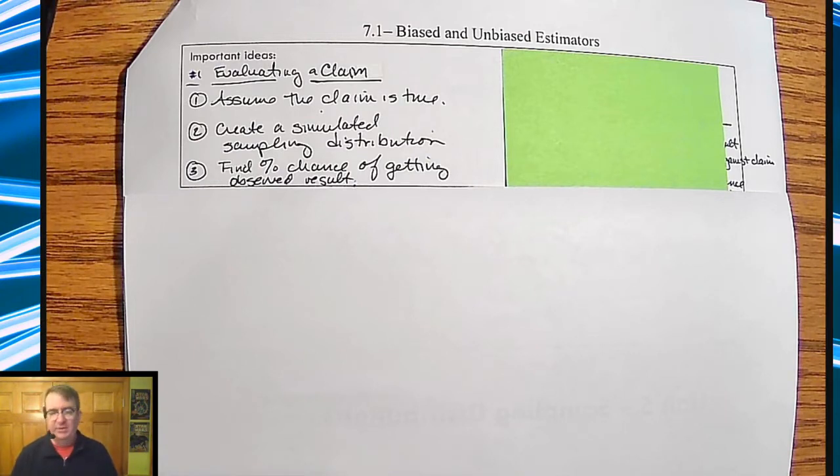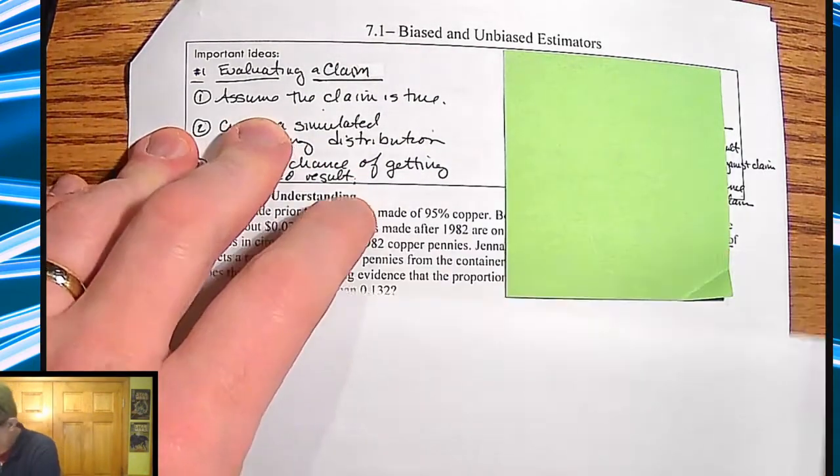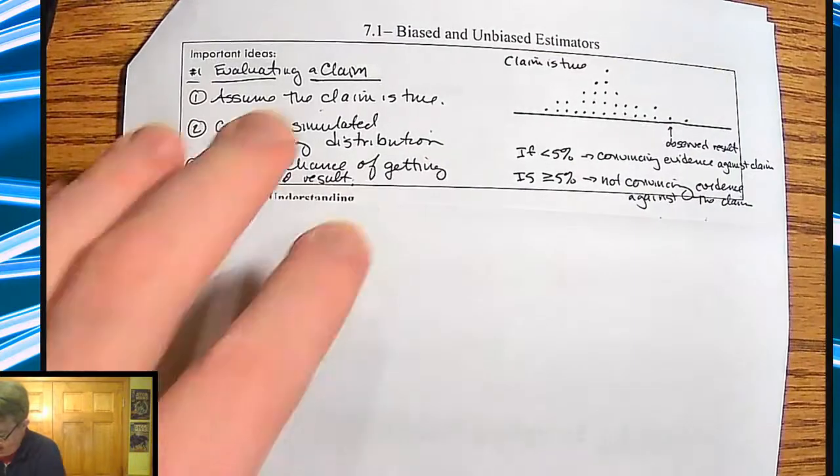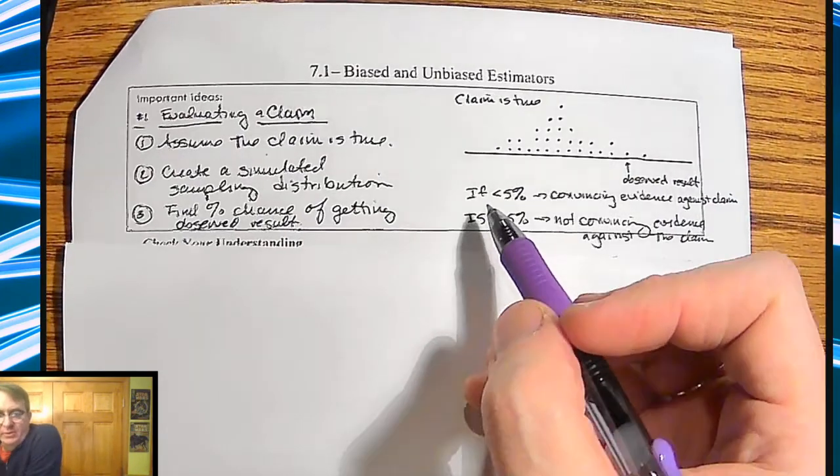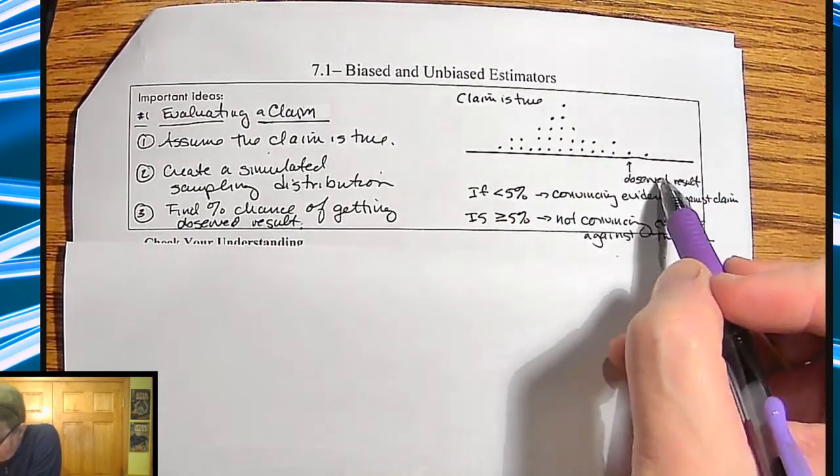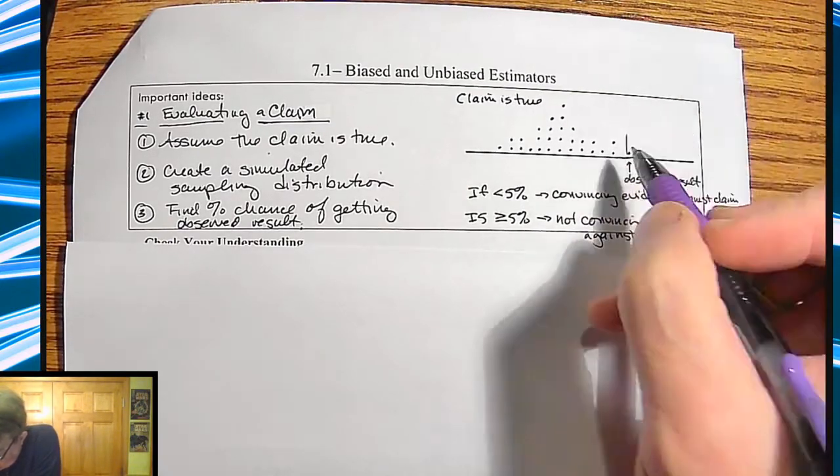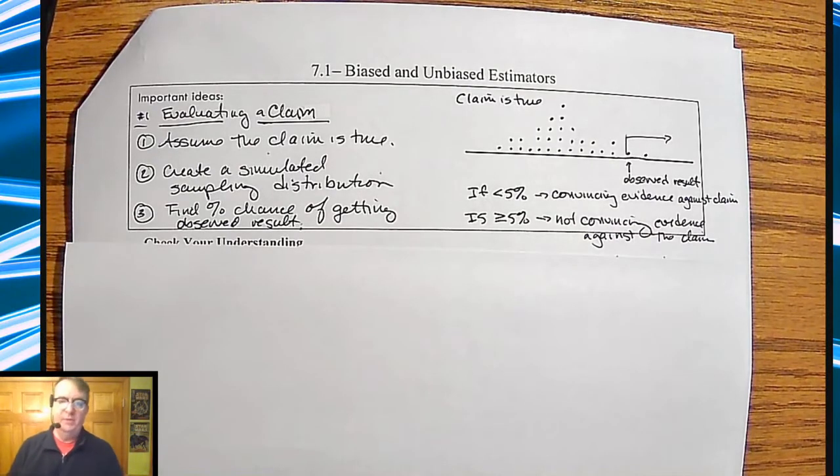So you're going to assume that everything is okay. This is what we're seeing. We'll do a sampling distribution and we're going to look for that sample. What you're going to do is assume that the claim is true. Here's our sampling distribution. Here's the observed results. What is the chances of that happening?